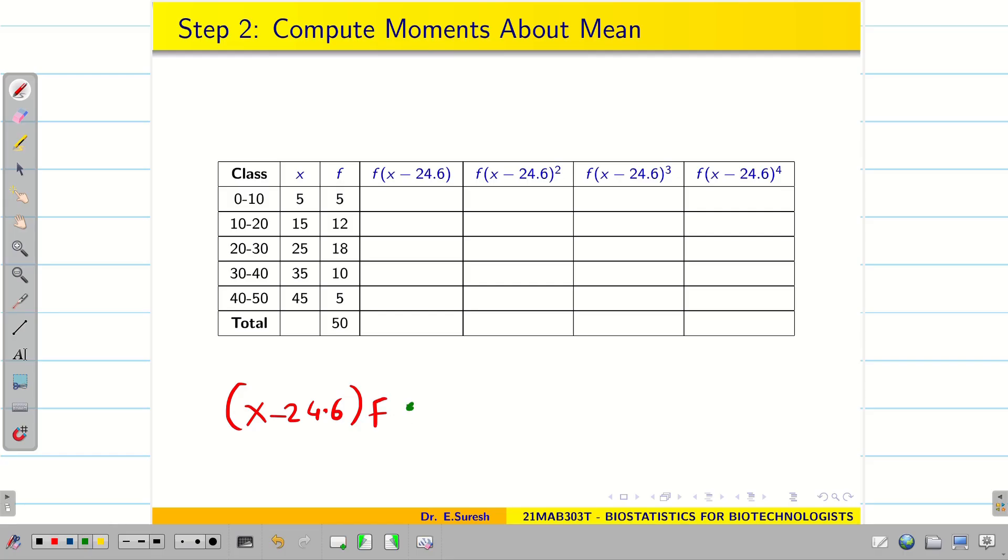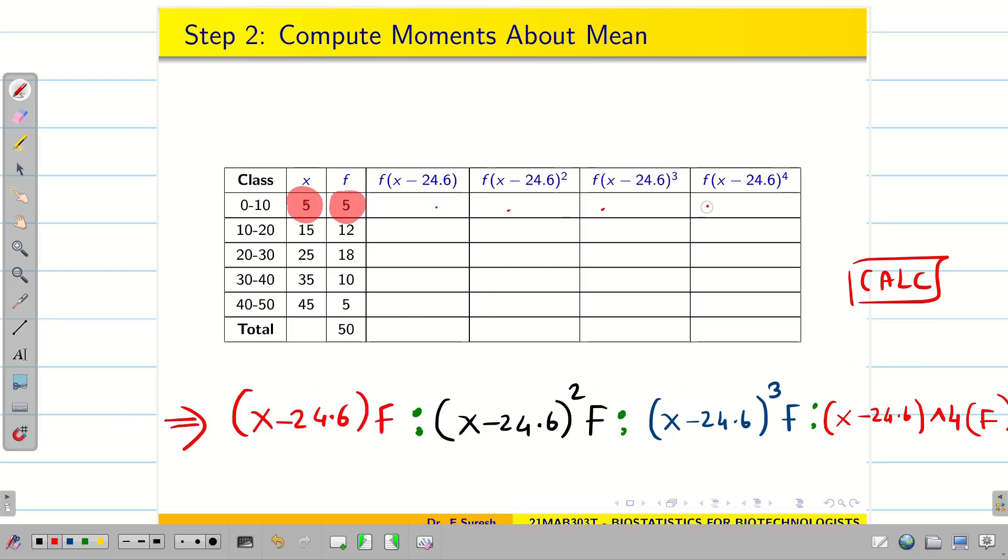Then we have to put the colon. Then x minus 24.6 whole square. You can press x square button. f. Again you put colon. x minus 24.6 all cube. Press shift plus x square. You get cube. Then again you put colon. And finally x minus 24.6. Now press power 4. And in the bracket put f for safety. Now press calc. It will ask x value. Enter the x value and then f value. Press equal to. It will give the solution like this. Fill one by one. So that's why I said if we use our technique, in one step you can get four datas.